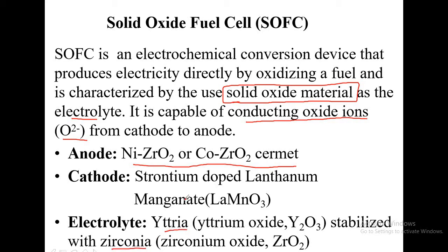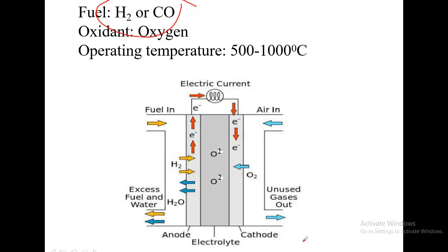The electrolyte is a combination of yttria and zirconia — yttrium oxide (Y₂O₃) stabilized by the addition of zirconium oxide (ZrO₂). There is fuel flexibility because this fuel cell can use either hydrogen or carbon monoxide. The operating temperature is very high because only at high temperatures does this kind of fuel cell operate, which is why quite different materials must be chosen.